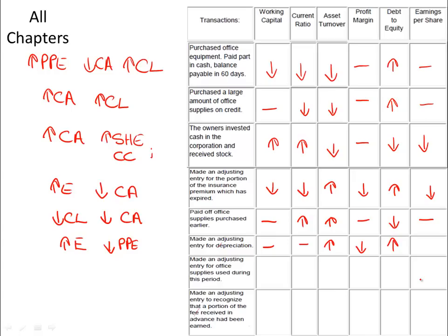Making an adjusting entry for supplies used during the period means the expenses go up and our current assets are reduced. Since current assets are reduced, working capital and current ratio will be reduced. Asset turnover will increase, profit margin will decrease, debt to equity will increase, and earnings per share will decrease.